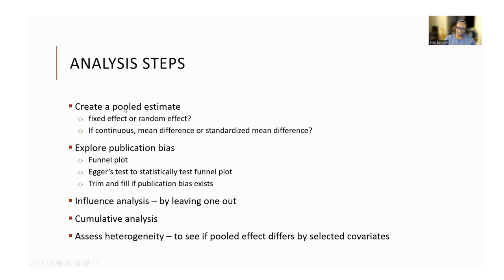The first thing you do is create a pooled estimate, or the average effect size, from all the studies. You're going to be making decisions here — decisions like what kind of model should I use to pool the estimate: is it fixed effect or random effect? You'll be making decisions like, if your effect estimate is a continuous variable, should I use mean difference or standardized mean difference? You have to have reasons for making one decision or another. In later sessions, you will learn about exploring publication bias, influence analysis, and how to assess heterogeneity. The bottom line is your work is not done once you've created the pooled estimate.